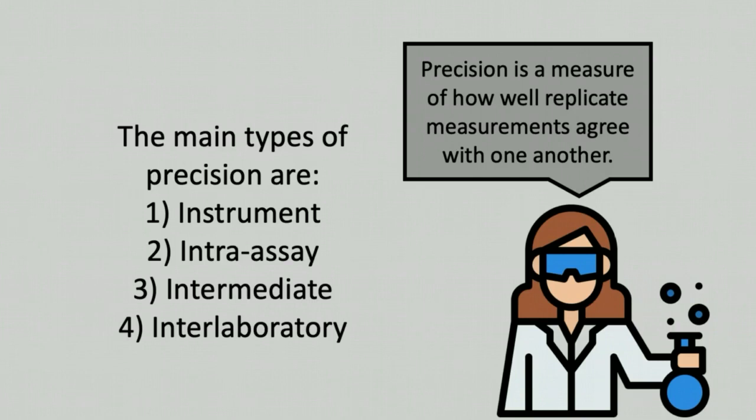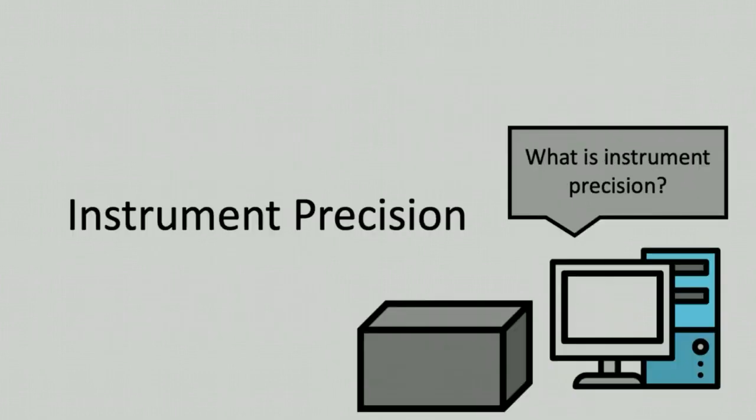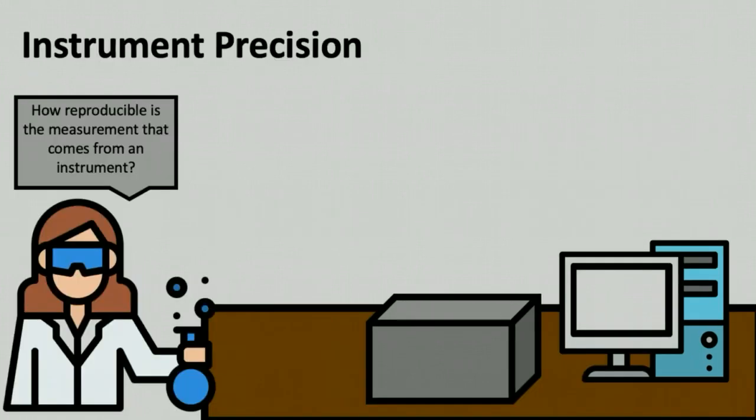The four types are: instrument precision, intraassay precision, intermediate precision, and interlaboratory precision. First, we'll look at instrument precision. Instrument precision is trying to answer the question: how reproducible is the measurement that comes from an instrument?